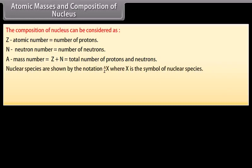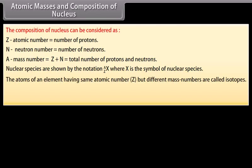Nuclear species are shown by the notation where X is the symbol of nuclear species. The atoms of an element having same atomic number Z but different mass numbers are called isotopes. For example, isotopes of hydrogen are shown.